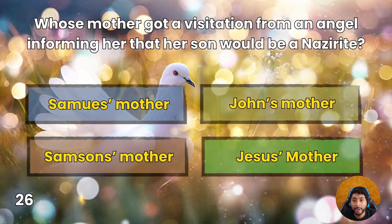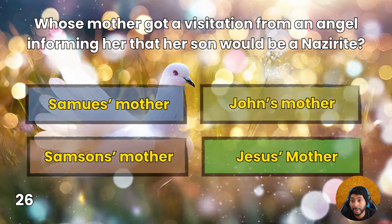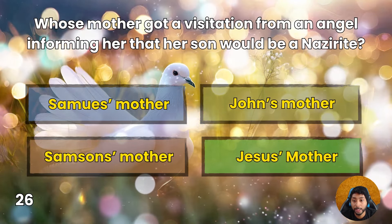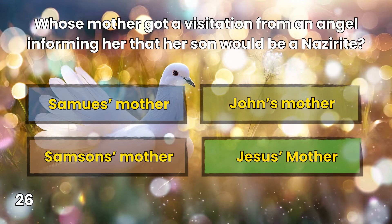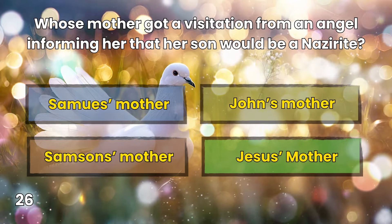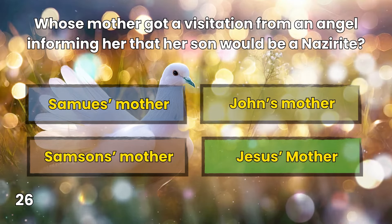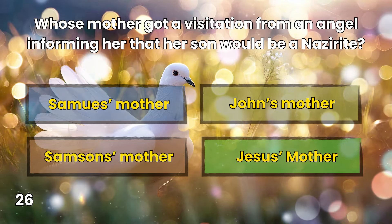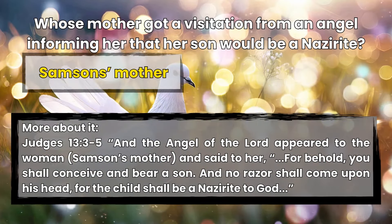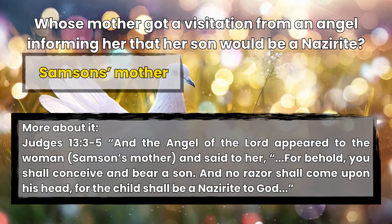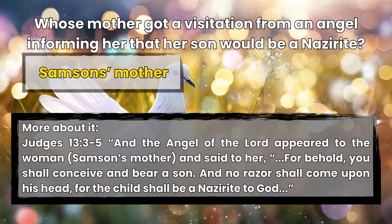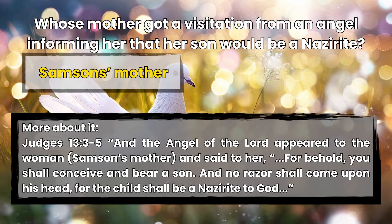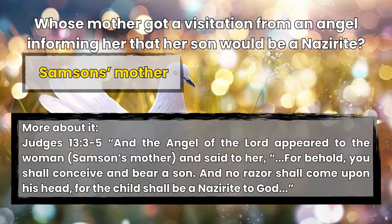Question 26: Whose mother got a visitation from an angel informing her that her son would be a Nazirite? Samuel's mother, John's mother, Samson's mother, or Jesus' mother? Samson's mother. Judges 13:3-5 — And the angel of the Lord appeared to the woman, Samson's mother, and said to her, 'For behold, you shall conceive and bear a son, and no razor shall come upon his head, for the child shall be a Nazirite to God.'